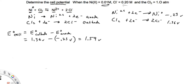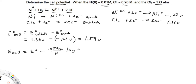That would apply if we were at 1 molar for all concentrations, but we're not. So we need to use the Nernst equation: E_cell equals E⁰ minus 0.0592 divided by N, where N is the number of electrons being exchanged, times the log of Q, which is the ratio of products over reactants.